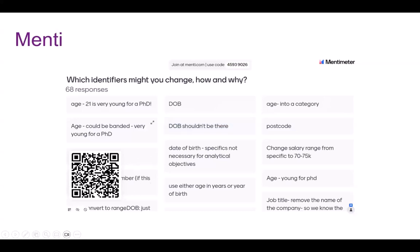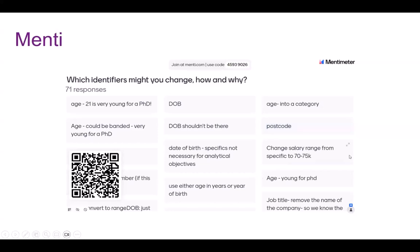A lot of you are honing in on the age — of course — and the postcode and job title. There are quite a lot of considerations for that bit of data. Given that the PhD age is 21, that is notably young, so you'll need to further anonymize the exact date of birth and the single year by looking at an age band, for example.